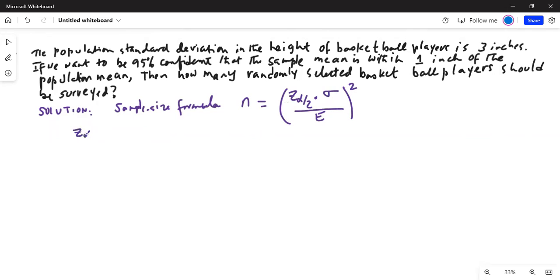Z alpha by 2 is the critical value of z. Sigma is the population standard deviation, and e equals the margin of error.